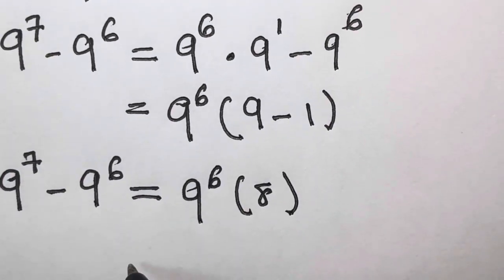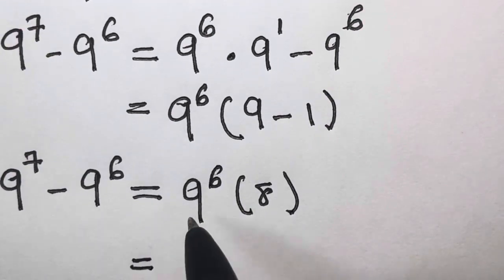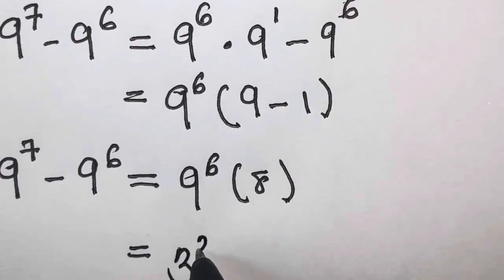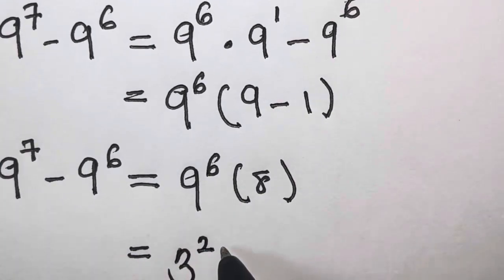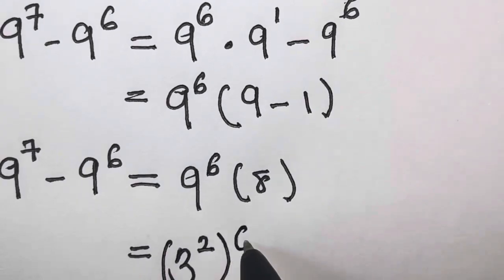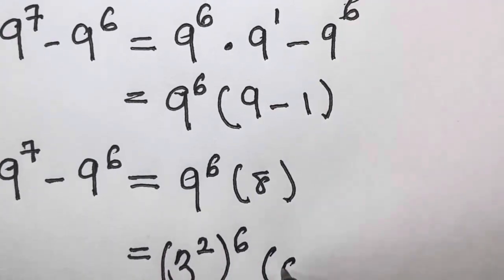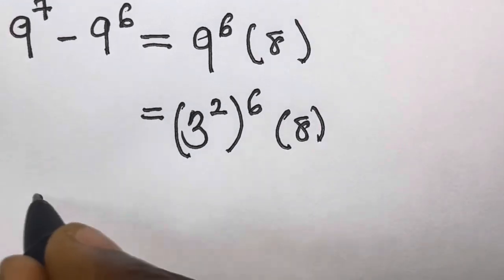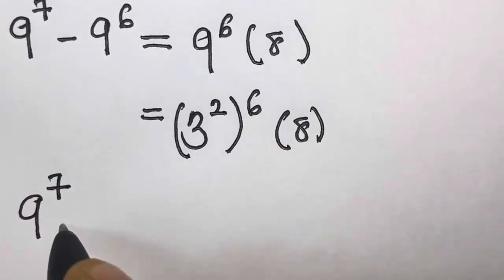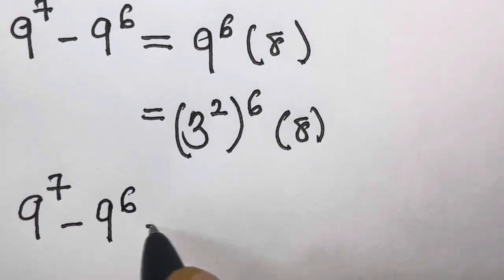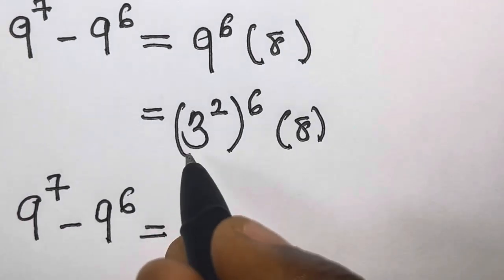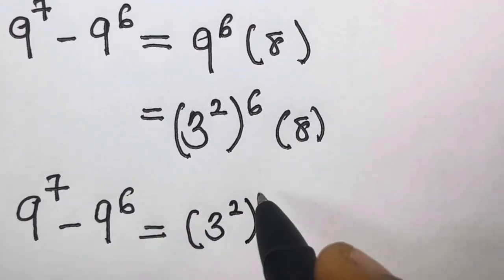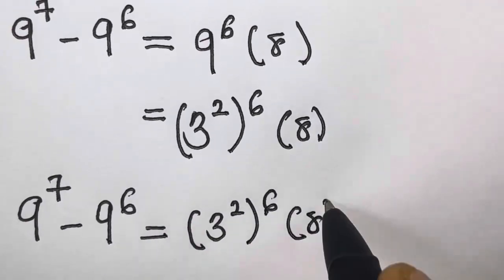So 9 can be expressed as 3 raised to the power 2, and we have raised to the power 6 already, so raised to the power 6, then multiplied by 8. So we have 9 raised to the power 7 minus 9 raised to the power 6 equals 3 raised to the power 2, raised to the power 6, times 8.